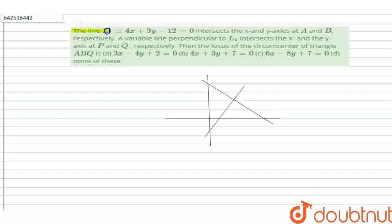In this question, given that the line L1, 4x plus 3y minus 12 equals 0, intersects the x-axis and y-axis at point A, B respectively, a variable line perpendicular to L1 intersects the x-axis and y-axis at point P and Q respectively. The locus of the circumcenter of the triangle ABQ is...